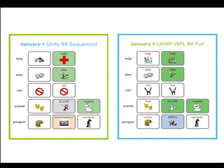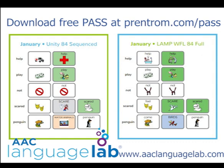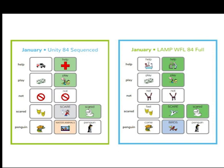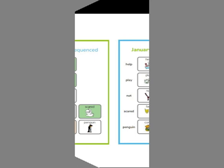If you need a different language configuration, download our free PASS software from our website or use the Smart Chart Generator on the AAC Language Lab to make your own. The target words for this story are help, play, not, scared, and penguin. For an added bonus, you can teach the word brave and the plural S marker to make the word penguins.